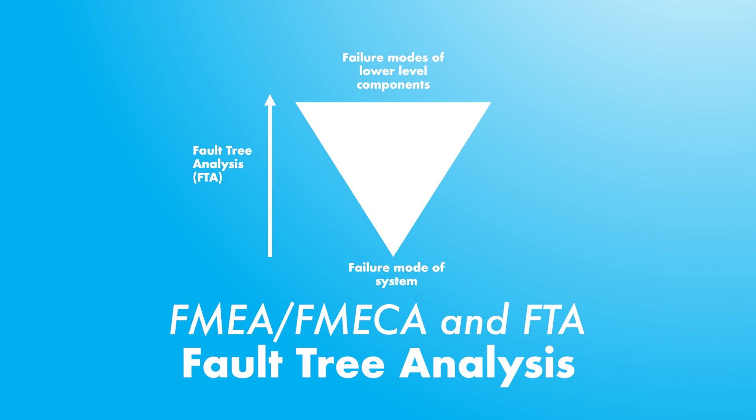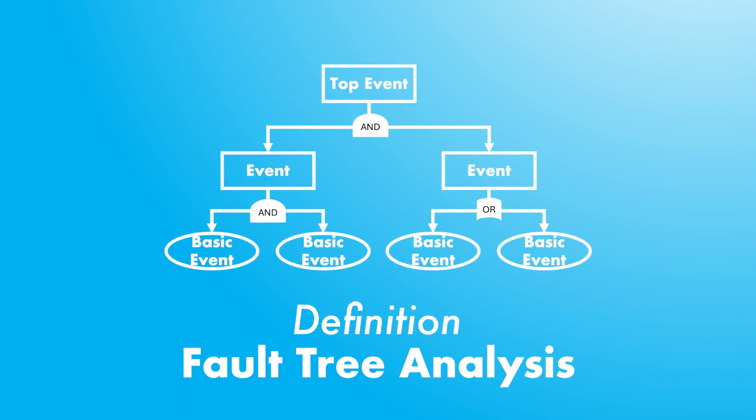In contrast to the bottom-up approach of FMEA and FMECA, fault tree analysis (FTA) is a deductive, top-down method. It begins at the top event — for example, loss of drone control — and searches for all possible causes at the first level, such as critical failure, perturbation, or collision. The reasons for these causes are then investigated at a further level until the basic events. The fault tree is complete when all events are depicted, showing how the lower basic events cause the top event.